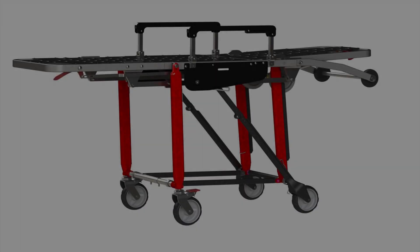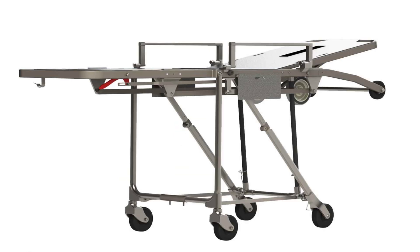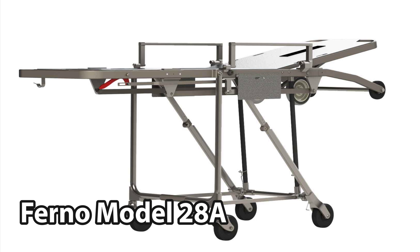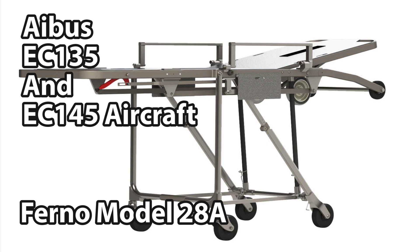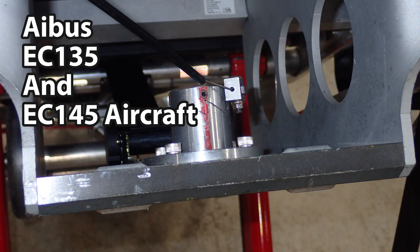The stretcher we have here is a Verno model 28A1. The same situation can happen with the smaller stretcher, which is just a model 28A. This is the Metro interior on an EC-135 helicopter. If you look underneath the stretcher at the mounting plate and the lock, this locks the stretcher into the aircraft with the red line on it.